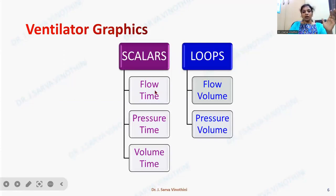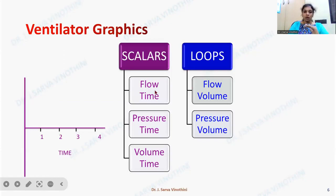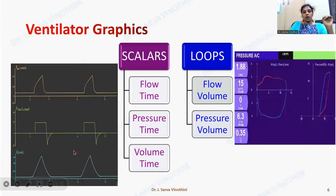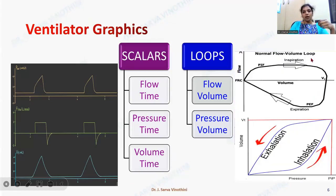Ventilator graphics can either be a scalar or a loop. A scalar means a single parameter is plotted over time — so it could be flow over time, pressure over time, or volume over time. A loop is where two scalars are plotted against each other — such as flow versus volume or pressure versus volume. It is called a loop because it ends at the same point where it begins.